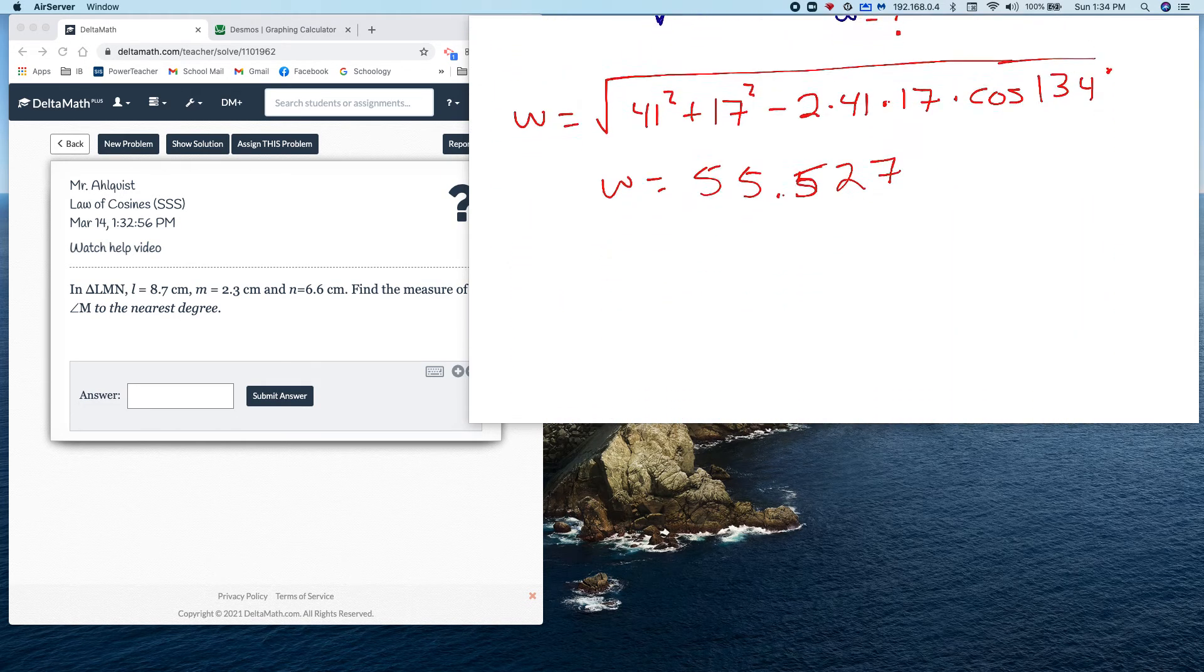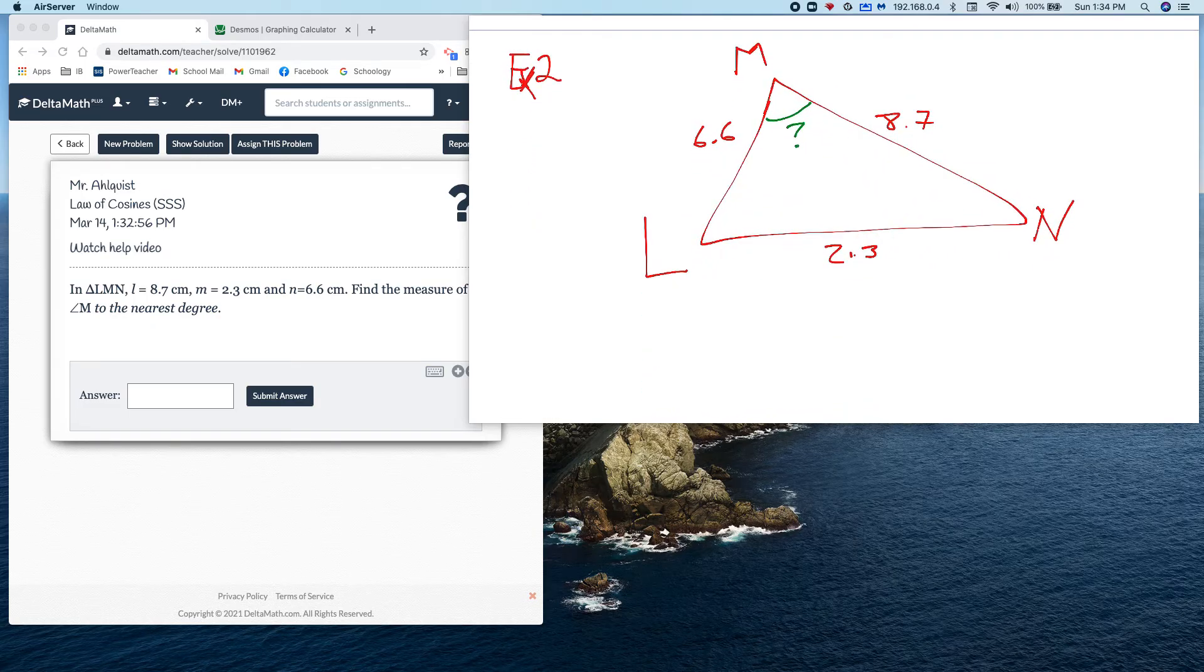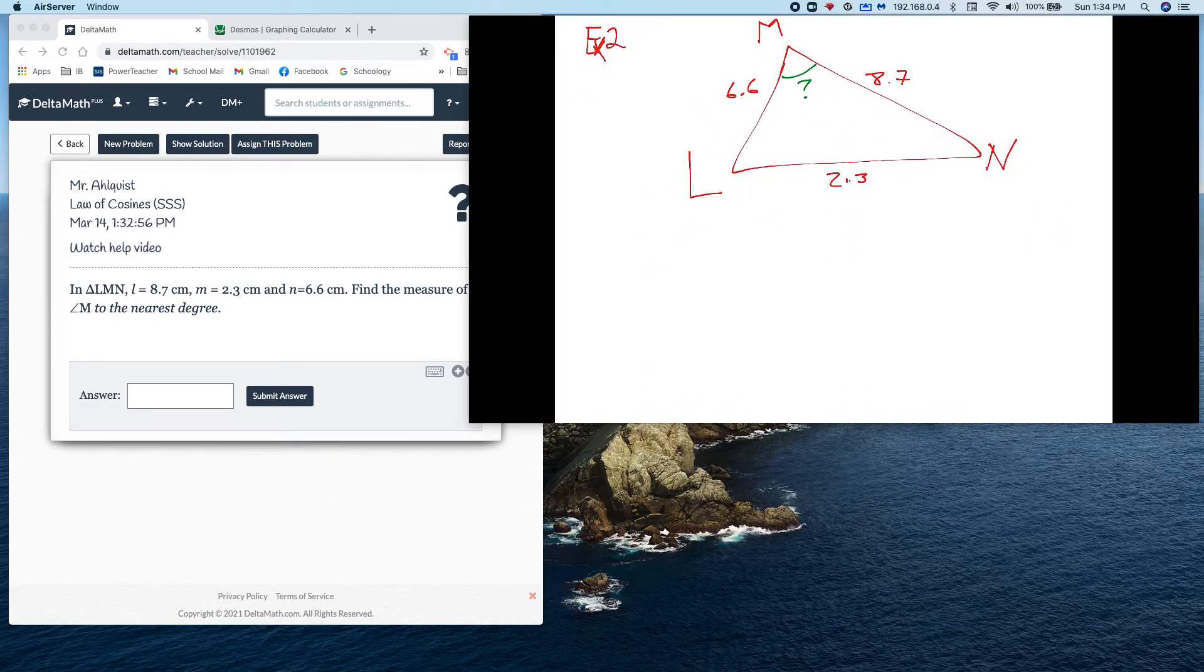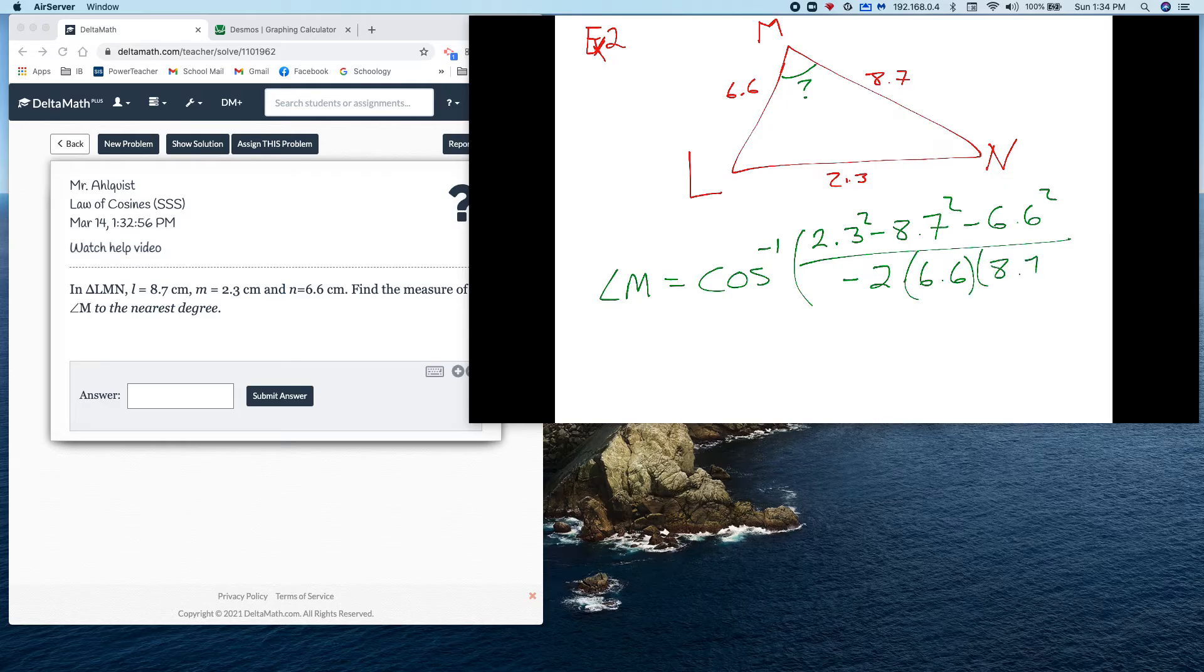So go back up here and look at what we did to find angle C and match that up with finding angle M. If you do that, you will be fine on this problem. So to find angle M, I can do the following. I can say angle M is equal to the inverse cosine of 2.3 squared minus 8.7 squared minus 6.6 squared divided by negative 2 times 6.6 times 8.7. I used parentheses there because I was afraid my multiplication symbols would get mixed up with my decimals in there.